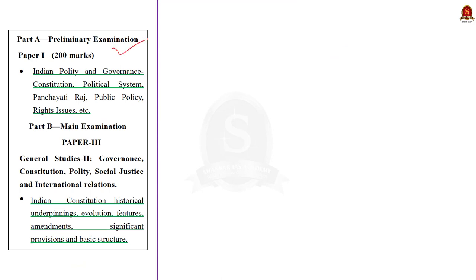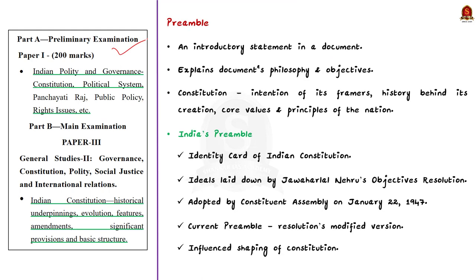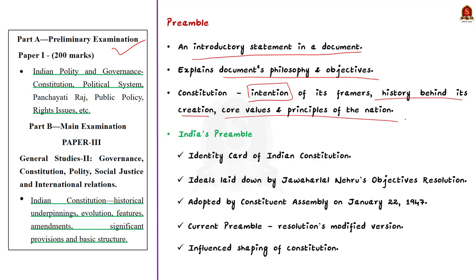Firstly, what is a preamble? In general, a preamble is an introductory statement in a document. This preamble explains the document's philosophy and objectives. Similarly, when you take it in a constitution, it presents the intention of its framers, the history behind its creation, and the core values and principles of the nation it tries to build. Now, coming to the preamble present in the Indian constitution — the preamble of the Indian constitution stands as an identical code of the constitution. The ideals behind the preamble to the Indian constitution were laid down by Jawaharlal Nehru's Objectives Resolution.